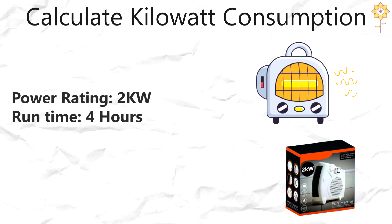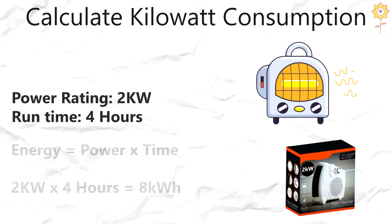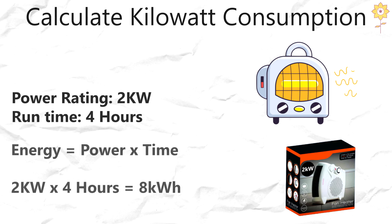Now we need to know how many kilowatt hours will be consumed. Using the energy formula — energy equals power times time — and knowing that the electric heater has a 2 kilowatt rating and a 4-hour run time, we get: 2 kilowatts times 4 hours equals 8 kilowatt hours.